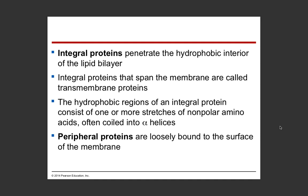Our membrane proteins can function to do six different things: they can be transport proteins, have enzymatic activity, be attached to the cytoskeleton and extracellular matrix, be involved in cell-to-cell recognition, help with intracellular joining, and help with signal transduction. Integral proteins have both hydrophilic and hydrophobic regions because they span the whole membrane - they are transmembrane proteins. Peripheral proteins are loosely bound to the surface of the membrane, typically on the cytoplasmic side, and they roll along the cell surface.